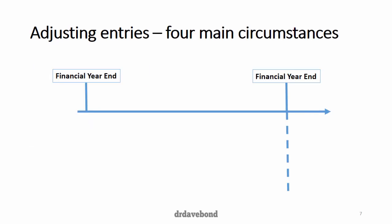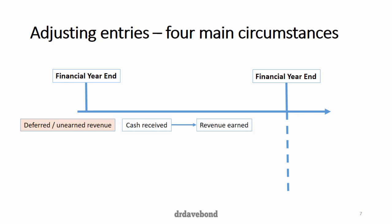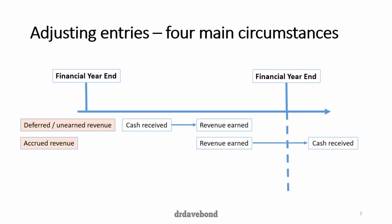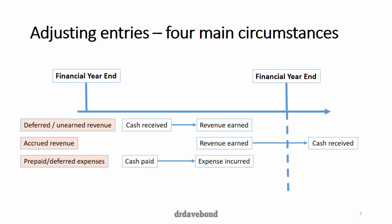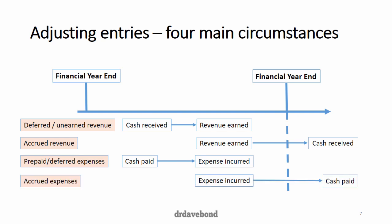The four main circumstances for adjusting entries turn on when there is a separation between when the expense or revenue is recognized and when the cash moves. The first is deferred or unearned revenue — cash received prior to revenue being earned. Accrued revenue is when revenue is earned prior to cash being received. Prepaid or deferred expenses are when cash is paid before the expense is incurred. And accrued expenses are when the expense is incurred before cash is paid.